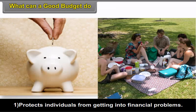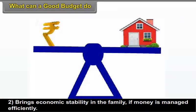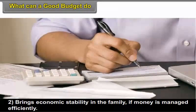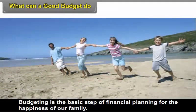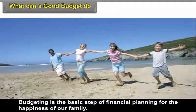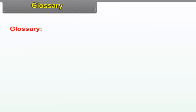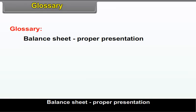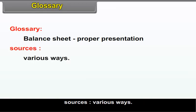There is a balance of Rs. 5,000. What can a good budget do? It protects individuals from getting into financial problems. It brings economic stability in the family if money is managed efficiently. Budgeting is the basic step for financial planning for the happiness of our family. Glossary: Balance sheet – proper presentation; Sources – various ways.